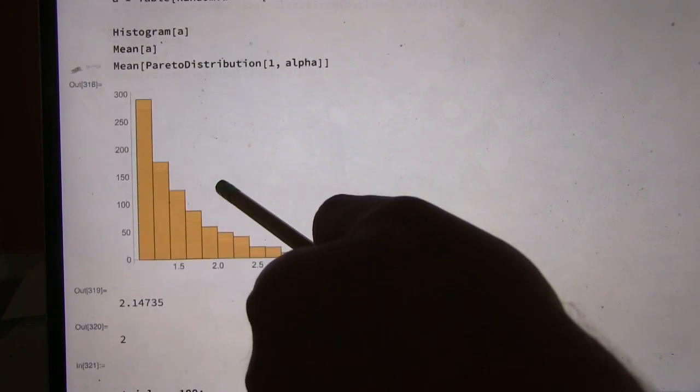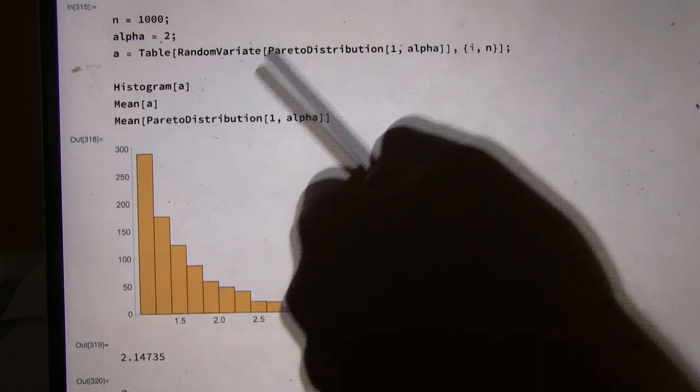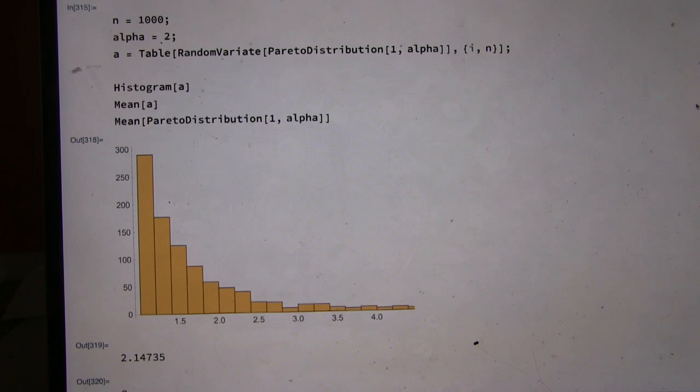So this alpha equals two is a pretty well behaved one. And Nassim was mentioning pandemics are more like alpha equals 1.03. So we'll look at that in the next two videos.